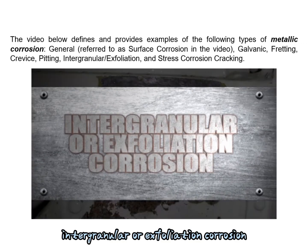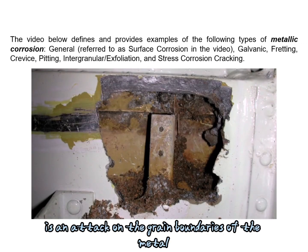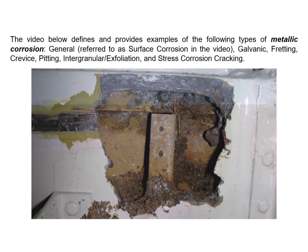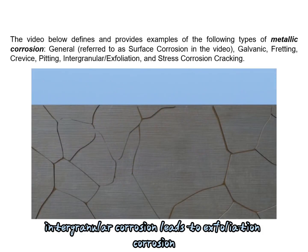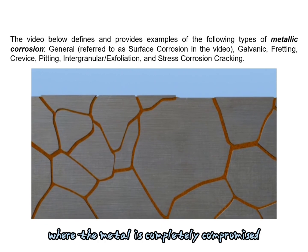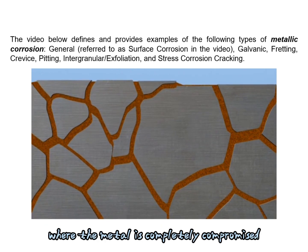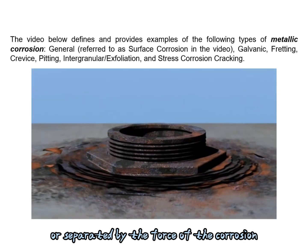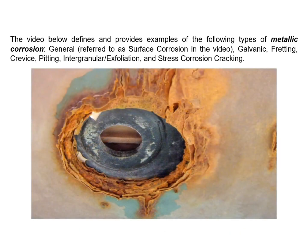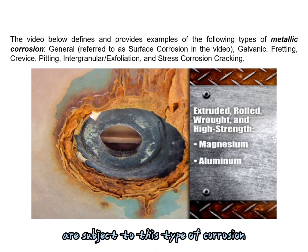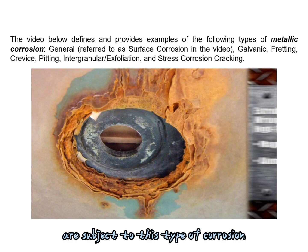Intergranular or exfoliation corrosion is an attack on the grain boundaries of the metal. Left untreated, intergranular corrosion leads to exfoliation corrosion, where the metal is completely compromised and the grains of the metal are lifted up or separated by the force of the corrosion. Extruded, rolled, wrought, and high-strength aluminum and magnesium are subject to this type of corrosion.